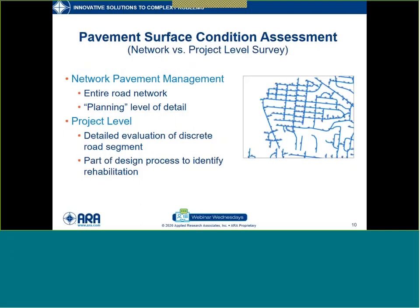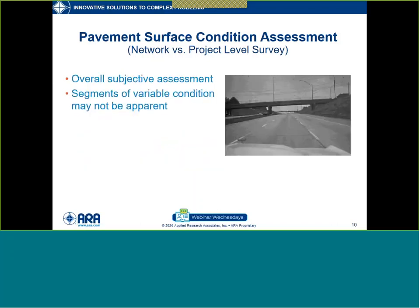Now I want to talk about condition assessment — looking at the surface of the pavement. Before I do that, I want to distinguish between network and project level pavement management surveys. Some of the tools I'll be talking about were really developed for network level pavement management. Network level looks at an entire road network — maybe a city with 300 centerline miles of road — collecting data to get planning-level detail, distinguishing what road segments need major rehab, minor rehab, and what year. Whereas at the project level, we're looking in great detail at a discrete section of pavement as part of the design process to identify the appropriate rehabilitation.